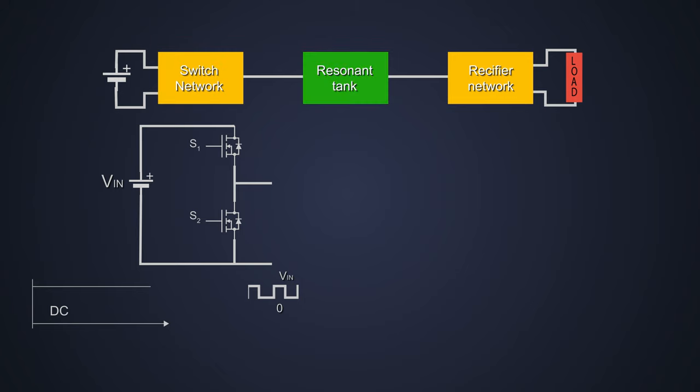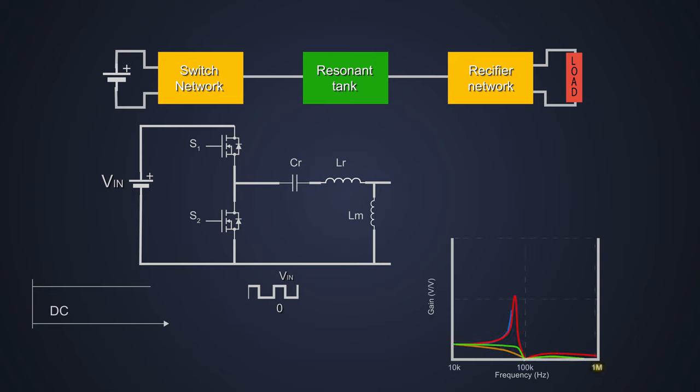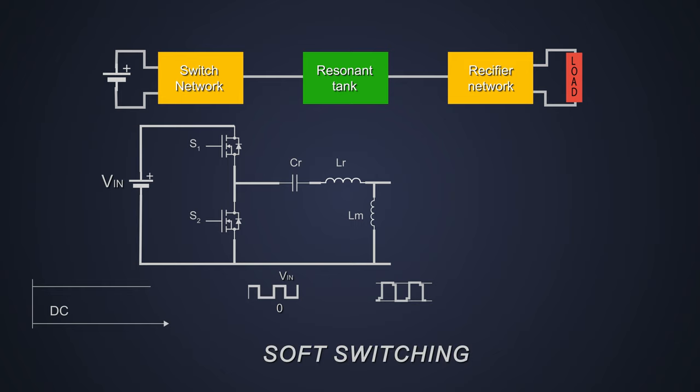Next, the resonant tank is a two port network formed by inductors and capacitors which modulates their gain amplitude by changing the pulsating signal frequency. This converter can work in the range of megahertz. This resonant tank smooths out the square wave power signal which is being fed to the rectifier and it is very helpful for soft switching of the switching elements.